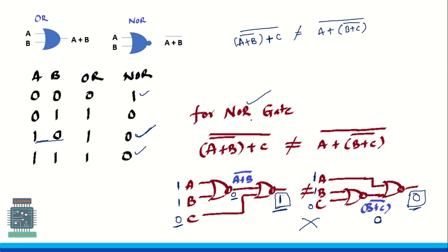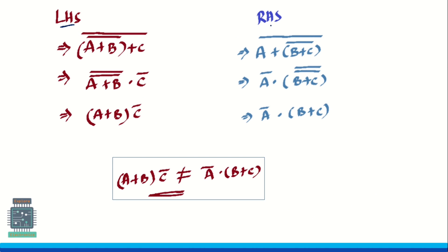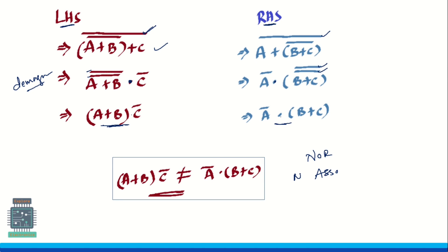To prove this properly we go with LHS and RHS simplification. LHS is (A plus B whole bar) plus C, whole bar. Simplifying using De Morgan's theorem: the inner bar gives (A plus B) bar, which becomes A bar dot B bar; then applying the outer bar, this plus becomes dot and C bar remains, and the double bar on (A plus B) cancels, giving (A+B)·C̄. For the RHS, A plus (B plus C) whole bar, whole bar — simplifying gives Ā dot (B+C) double bar, and the double bar cancels, leaving Ā·(B+C). These two expressions are not the same, so NOR gate does not satisfy the associative property — it is non-associative.